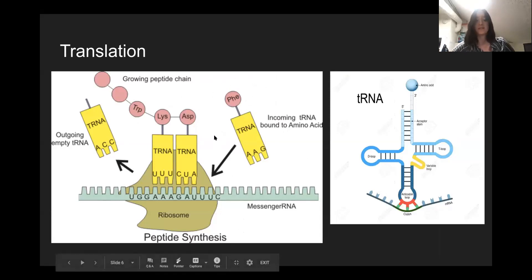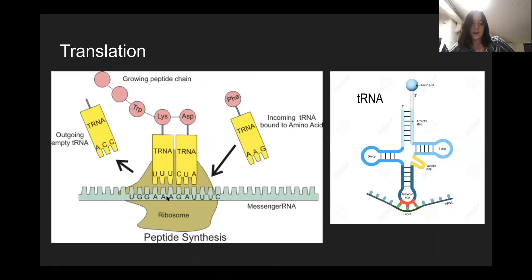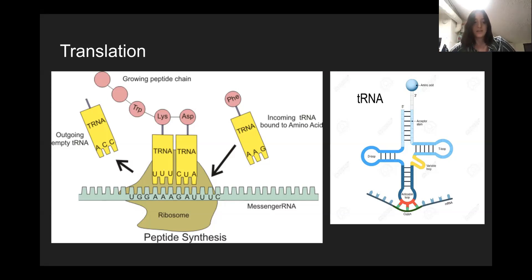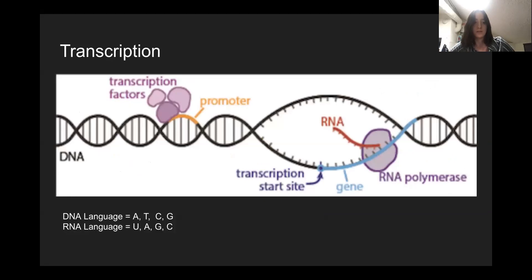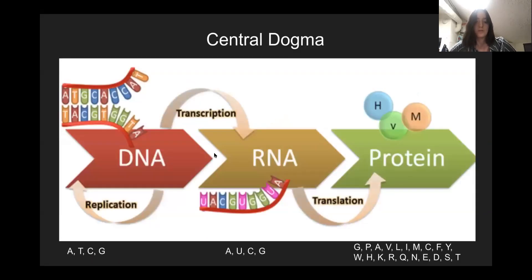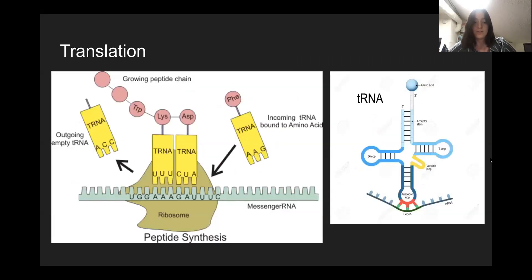Translation is done with tRNA. For instance, AAA encodes for lysine, and GAU encodes for asparagine. Three mRNA bases code for one amino acid. This is the translation from mRNA into your polypeptide chain. These two processes — transcription and translation — describe the flow of genetic information from DNA to RNA to protein.